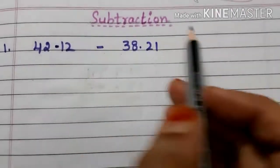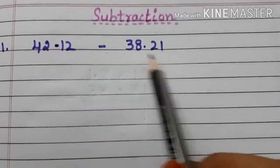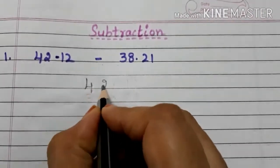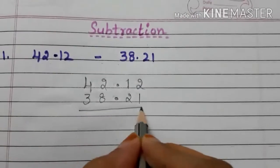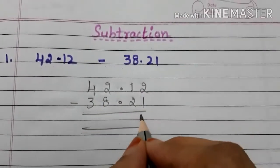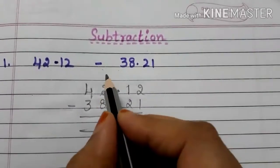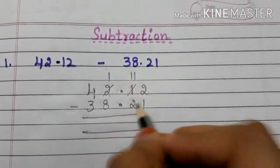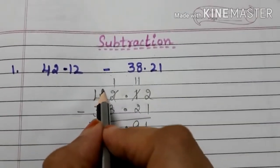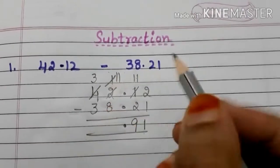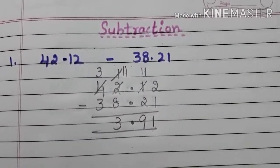Now let us move to subtraction. The first example is 42.12 minus 38.21. These two decimals are like decimals. Arrange them: 42.12 minus 38.21. Subtract: 2 minus 1 is 1. We cannot subtract 2 from 1, so take borrow — this becomes 1 and this becomes 11. 11 minus 2 is 9. We cannot subtract 8 from 1, take borrow — this becomes 3 and this becomes 11. 11 minus 8 is 3. 3 minus 3 is 0. So the answer is 3.91.